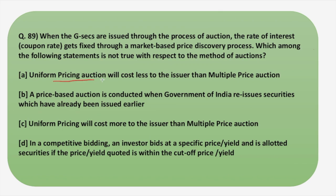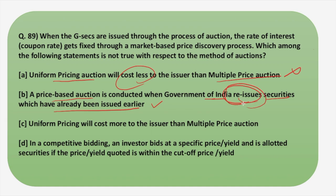Reviewing the statements: Option A says uniform pricing auction will cost less to the issuer than the multiple price auction — this is not correct. Option B says a price-based auction is conducted when the government reissues previously issued securities — this is correct; yield-based auction is preferred for new issues. Option C says uniform pricing will cost more to the issuer than multiple price auction — this is correct. Option D on competitive bidding is also correct. So option A is the incorrect statement and is the answer.